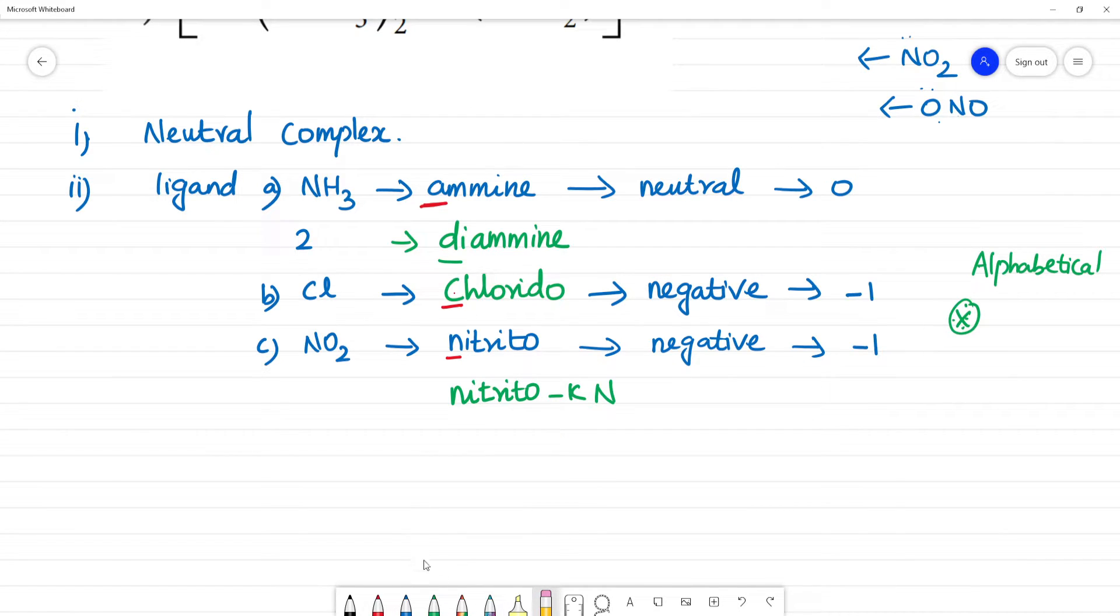Amine we name first. So we name diamine first. Then we name chlorido. After that, we name nitrito. Clear? When we look at the complex ligands, we look at the original name of the ligand. The prefix and suffix are not considered in alphabetical order arrangement. So amine comes first with A, then chlorido with C, then nitrito with N.